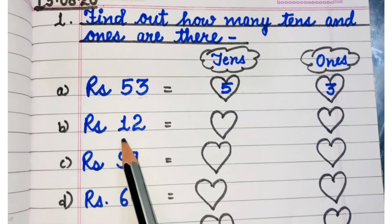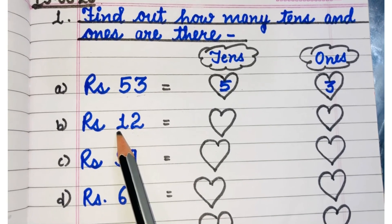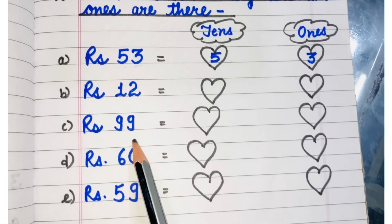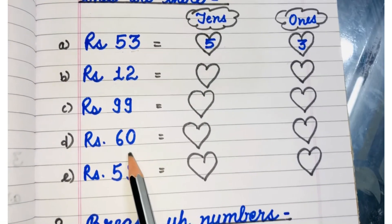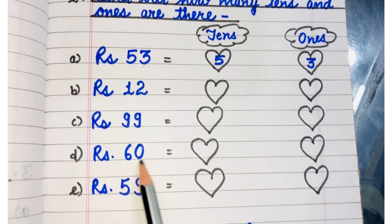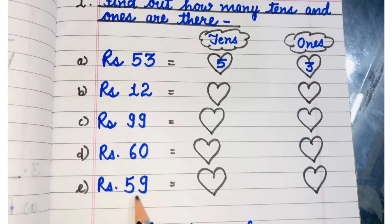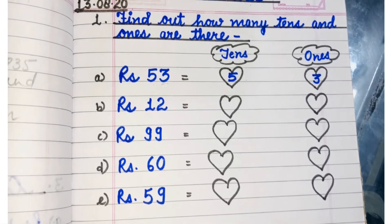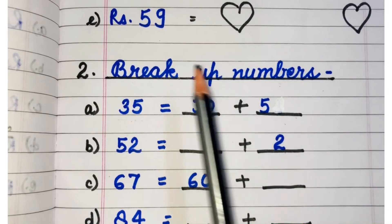Same way, Rs. 12. Here, 2 will come under ones and 1 will come under tens. You have to do all other questions same way. 99, 60, 0 will come at ones place and 6 at tens. 59, 9 will come at ones place and 5 will come at tens place. So I am sure this is clear. It is quite an easy exercise.